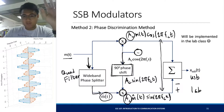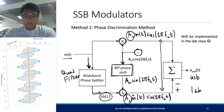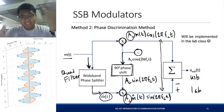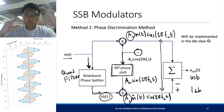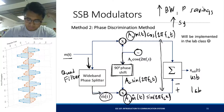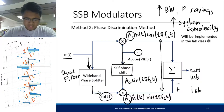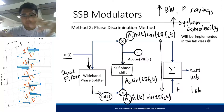Compared to a full AM wave and DSBSC, your single sideband modulator is the most difficult to implement among the three. That's the trade-off when you want to save bandwidth and power — your system gets more complicated. This is a fundamental trade-off in communication systems: if you want to save bandwidth and power, you need to increase the system complexity. And this remains true even in digital communications.